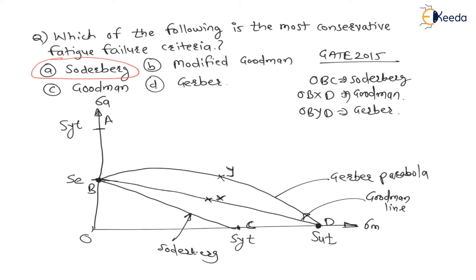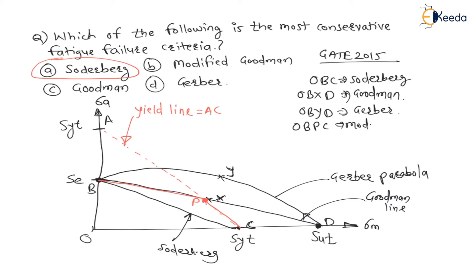Now for the modified Goodman diagram: we draw the yield-yield line, which is the line connecting SYT on both axes — that is, point A to point C. The modified Goodman region is O, B, P, C, where P is the intersection of the Goodman line and the yield-yield line. In other words, the modified Goodman diagram is the common region between the Goodman line and the yield-yield line.